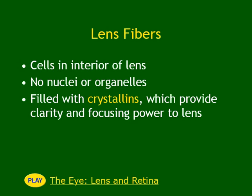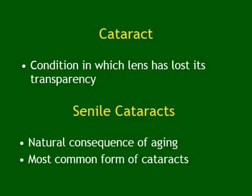The most important condition here is cataract — loss of transparency of the lens. If the lens is not transparent, that is a cataract. There is a type called senile cataract, which is very common in elderly people. You may notice a white appearance inside the eye of grandparents — that is a cataract.